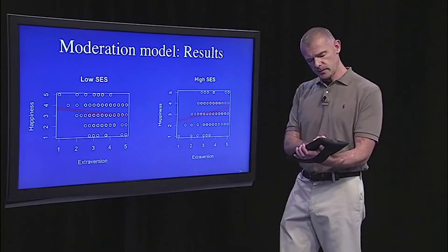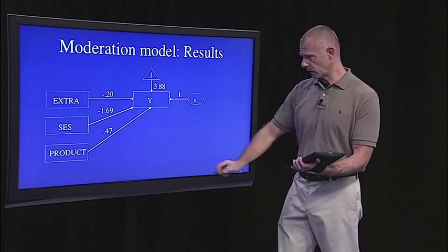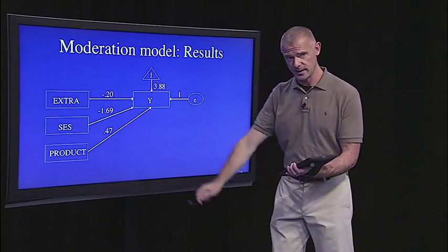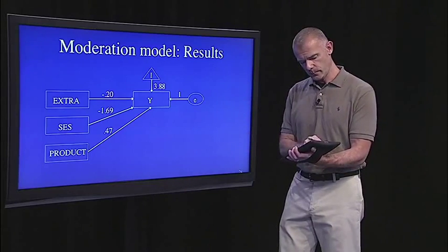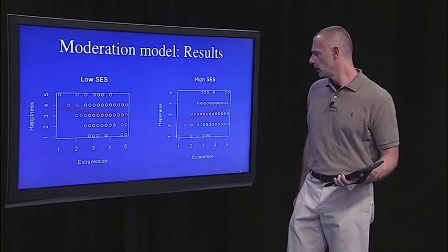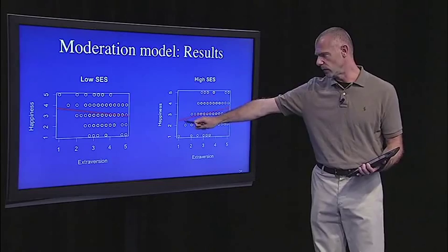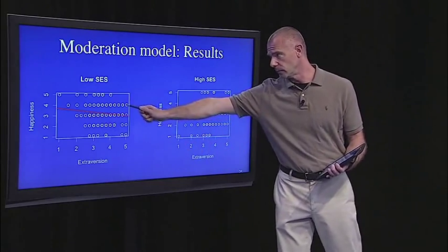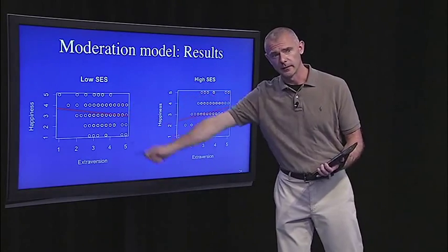The other thing to notice, and this comes through here in the intercept and this value for SES, again, hoping to sort of make these more meaningful for you, those just correspond to the intercept. So you can see that the intercept for the high SES group is much lower than the intercept for the low SES. That's the 3.88 right there.